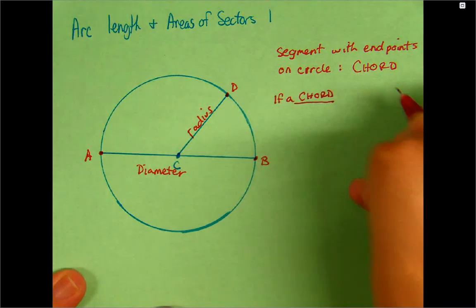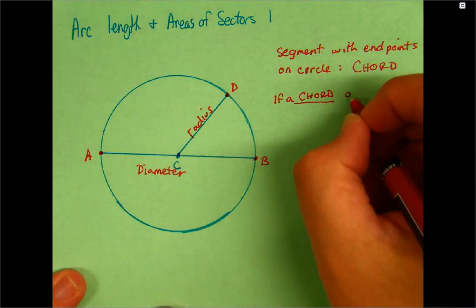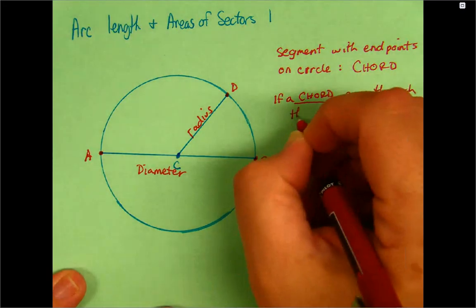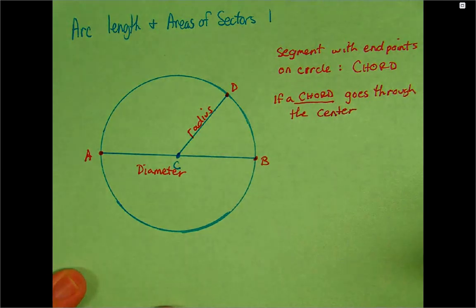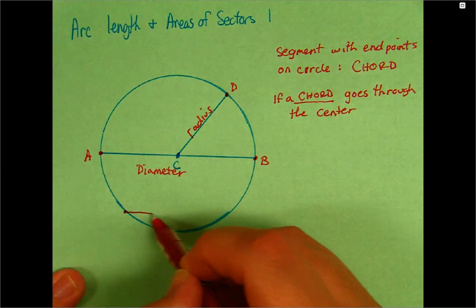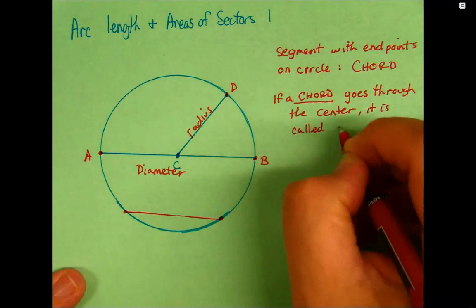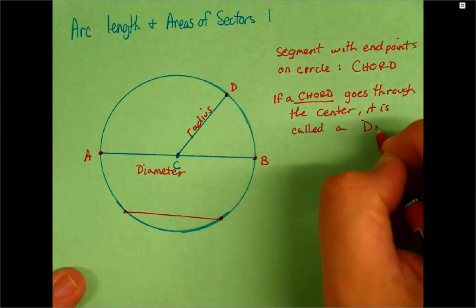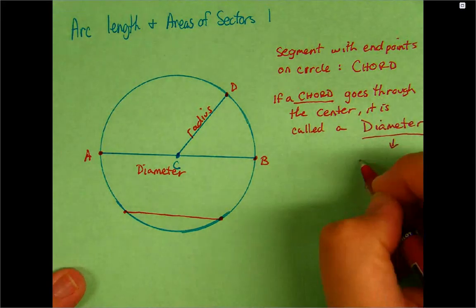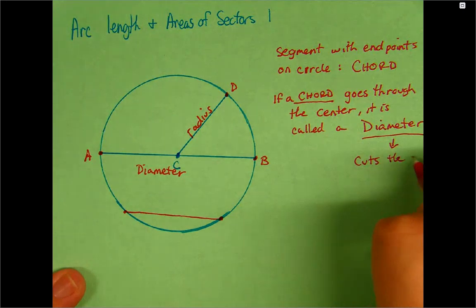Now, if a chord goes through the center, you could have a chord that doesn't hit the center, but if you have a chord that goes through the center, it is called a diameter. And the diameter essentially cuts a circle in half.